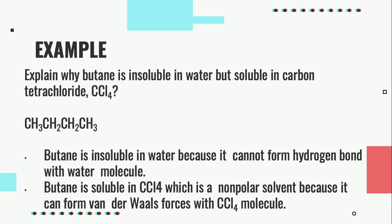Explain why butane is insoluble in water but soluble in carbon tetrachloride. Butane is insoluble in water because it cannot form hydrogen bonds with water molecules. It is soluble in carbon tetrachloride, which is a non-polar solvent, because it can form van der Waals forces with carbon tetrachloride molecules.